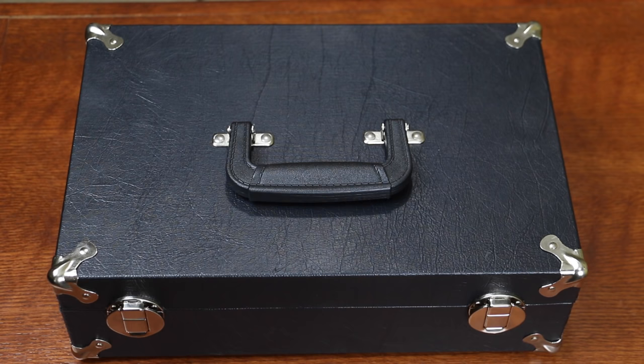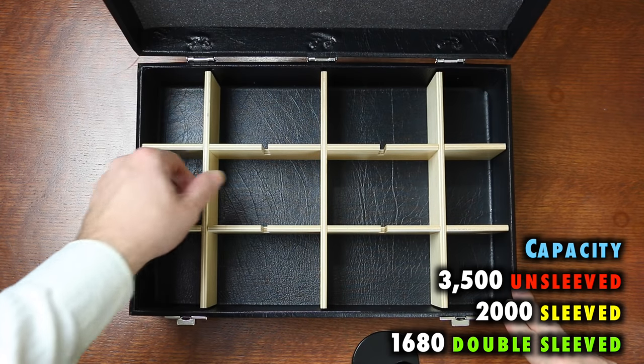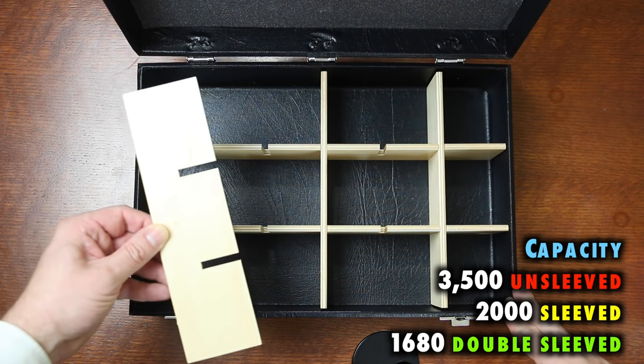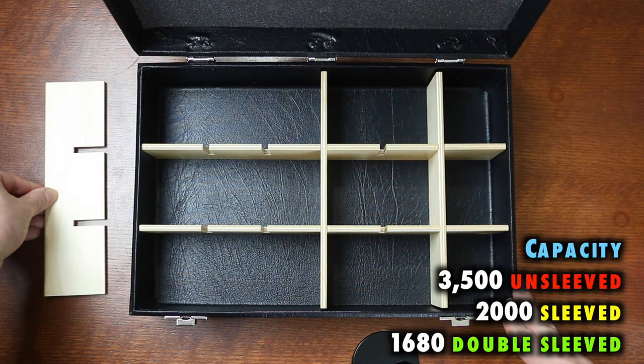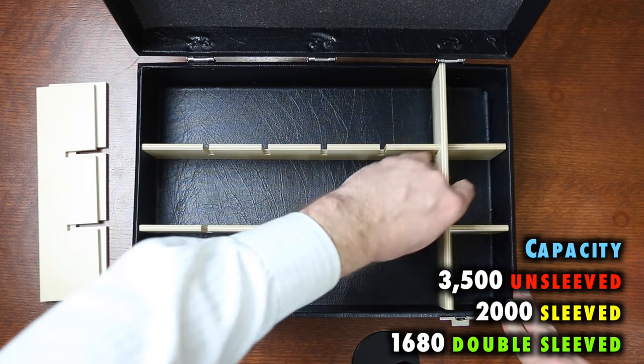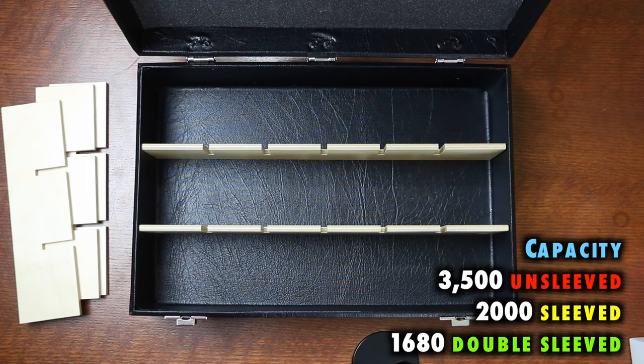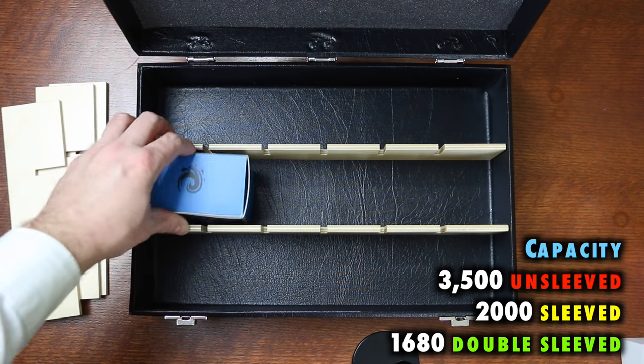The two main horizontal slats, however, are fixed in place. The case can hold a total of 3,500 cards unsleeved, 2,000 sleeved cards, or 1,680 double sleeved cards. This is obviously ideal for your cubes or deck libraries. But you can also store some deck boxes inside as well.